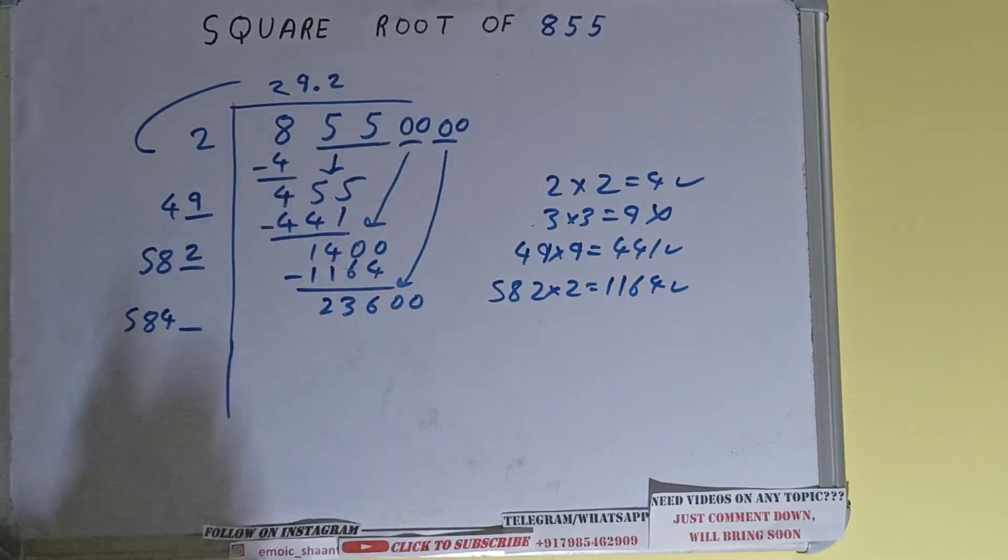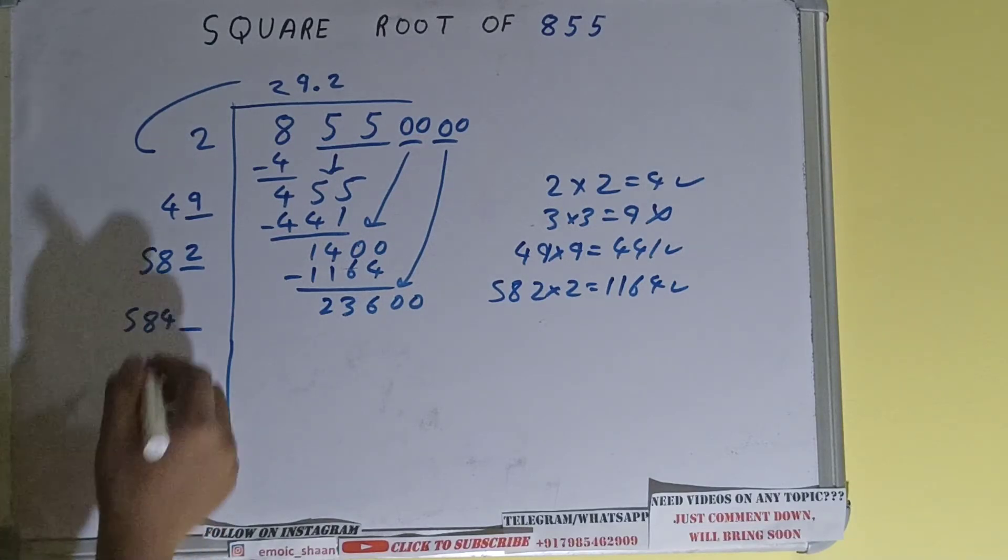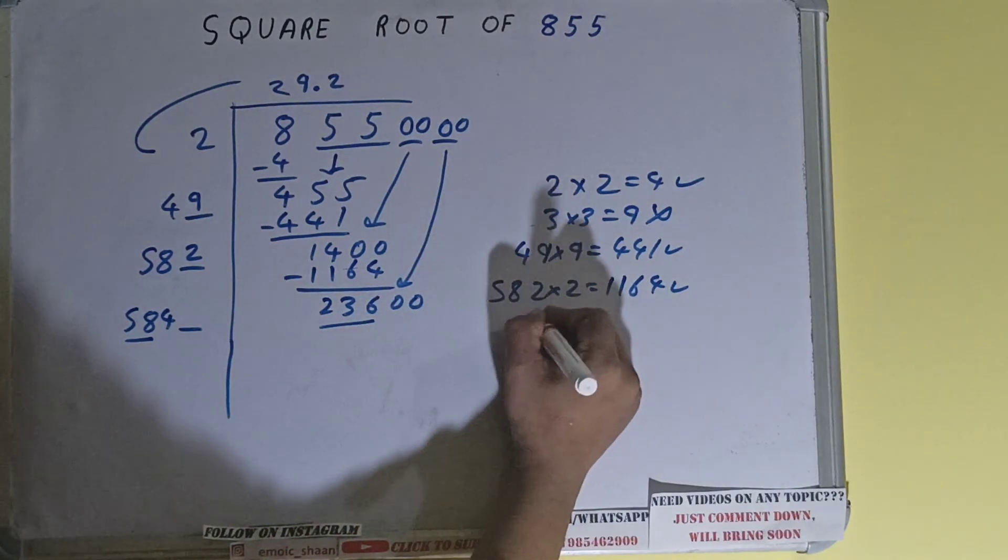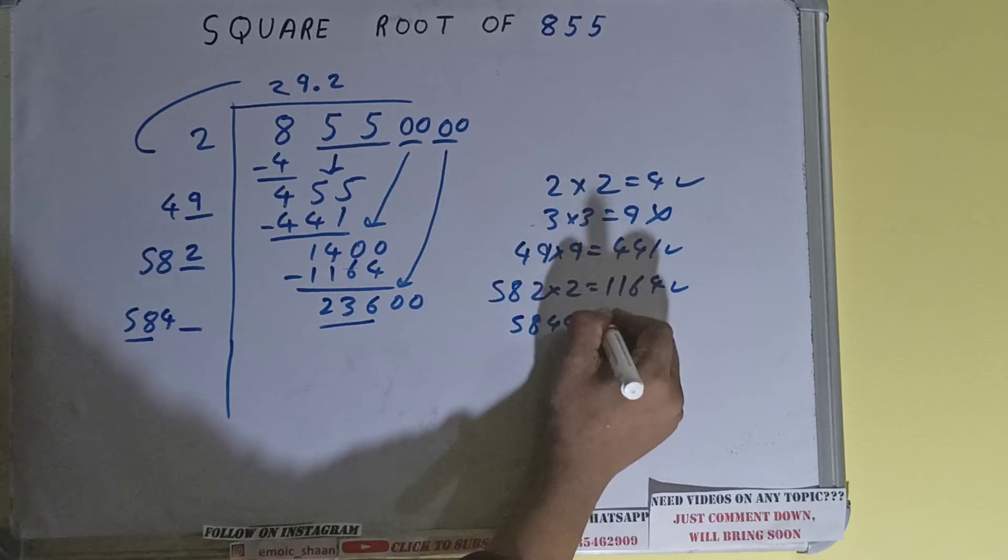Now again compare this 58 with this 236. So 58 four times is 232, so we can try 4 times. So 5844 into 4 we can try, it will be 23376 and that is good to take.